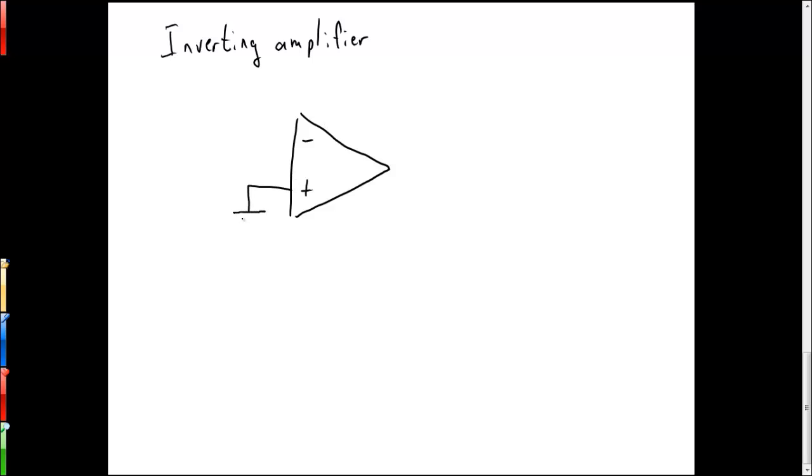And we'll connect the positive or non-inverting terminal to ground. We'll connect the inverting terminal through a resistor to our input, V in. And we'll connect the output, V out,